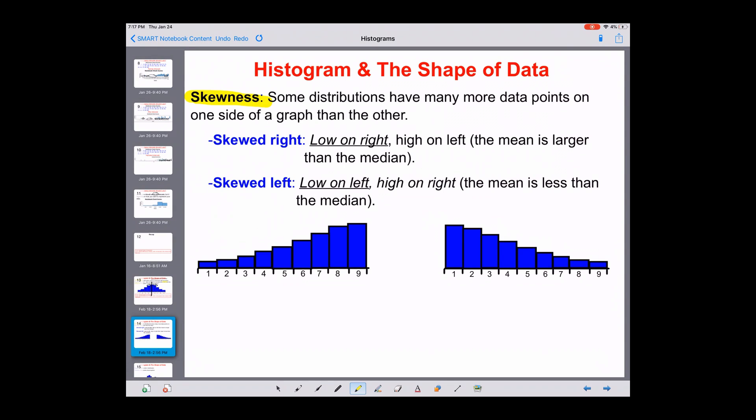Let's look at these. Skewed right means that it's going to be low on the right. Skewed left means that it's going to be low on the left. What does that mean in the context of means and averages? If it's low on the right, it's skewed right, which means the mean is going to be a little bit larger than the median. That means the mean is going to be pulled up.